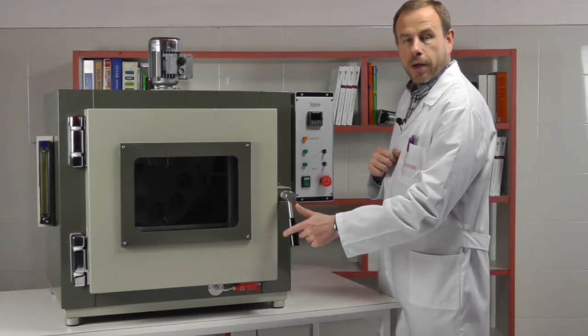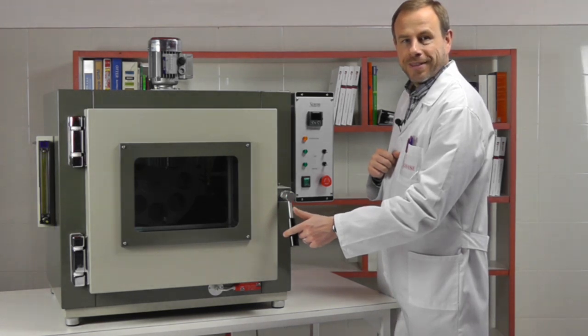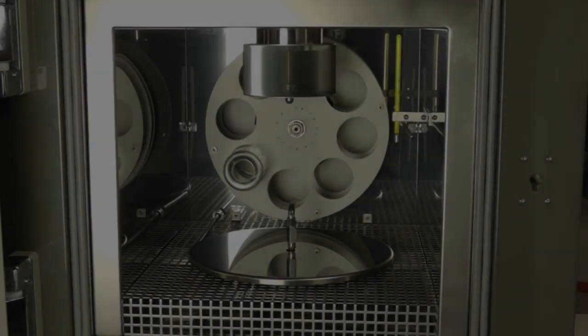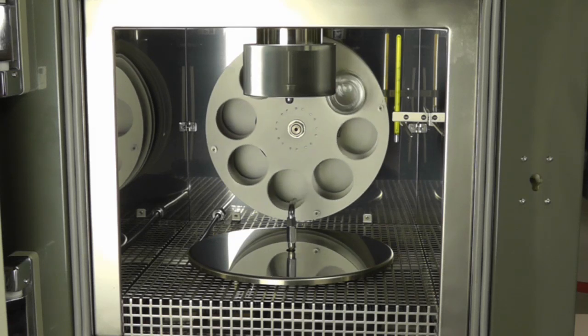So let's take a look now at the inside of the oven. Here we are. In the background we have the rotating shelf.